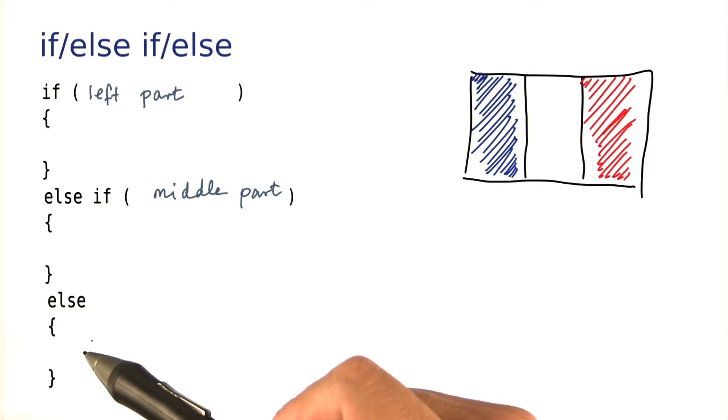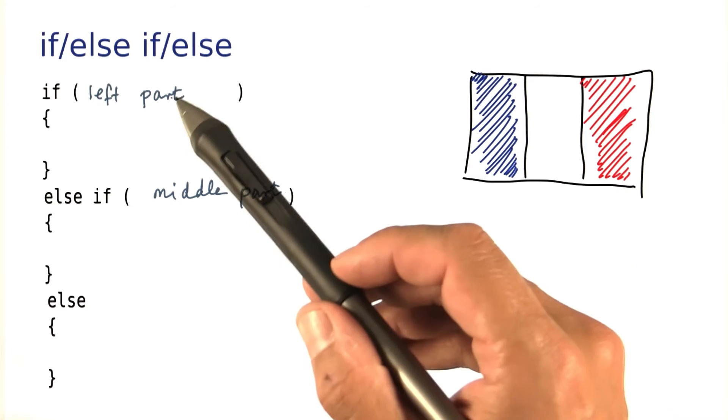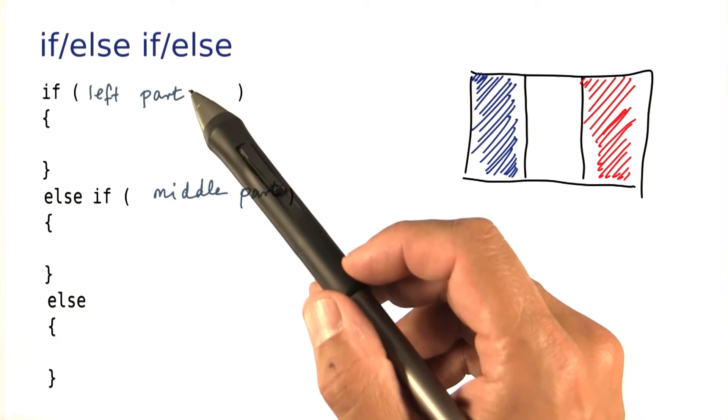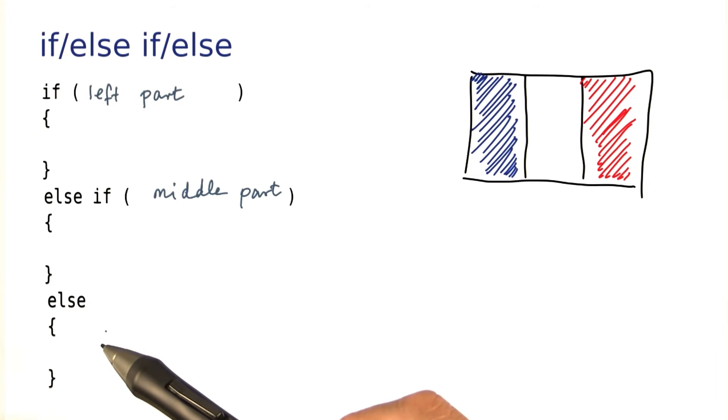And finally, you use an else for the remaining possibility. So here you need to supply two conditions. Is the point in the left? Is it in the middle? Or otherwise, of course, it has to be in the rightmost part.